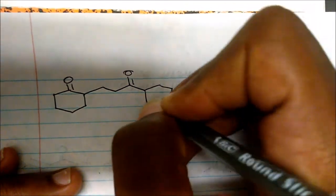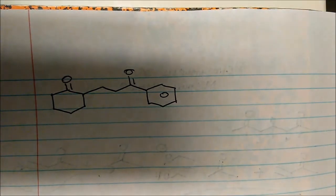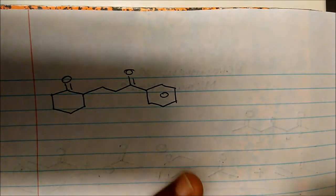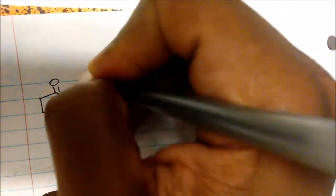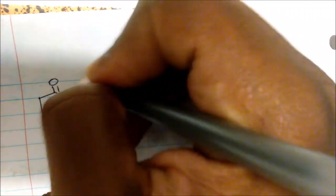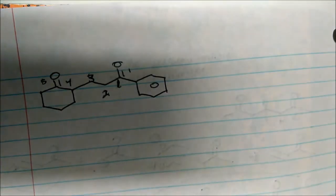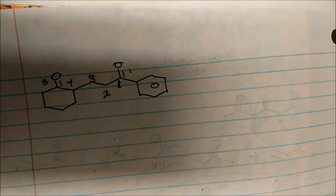Now, what about this one? What if on a test we're given this molecule to make? Look where the carbonyls are with respect to each other: 1, 2, 3, 4, 5 — so they're 1,5 with respect to each other. We're thinking about Michael addition, conjugate addition. I could break this bond here and there goes my conjugated ketone.